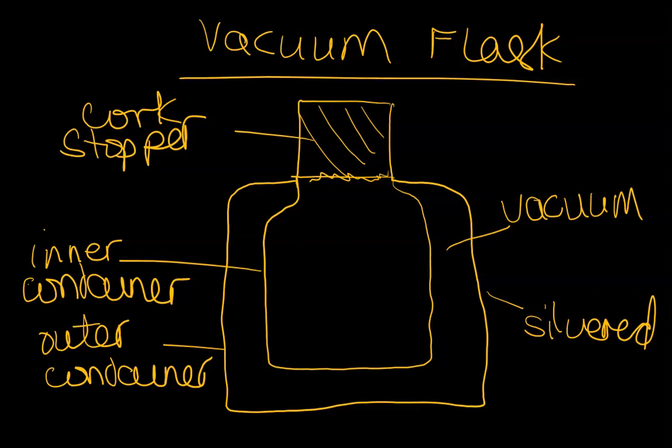The vacuum flask keeps hot things hot and cold things cold. It does that by having an inner container fitted within an outer container. The inner container is where you would keep your liquid. The purpose of it is that it is not physically touching the outer container, so that reduces heat loss through conduction. In between the inner and the outer container is where you have a vacuum. You do not have air. If you have a vacuum where you don't have any air, it means that you are reducing heat loss by convection.